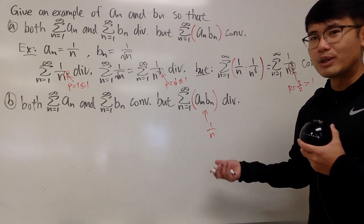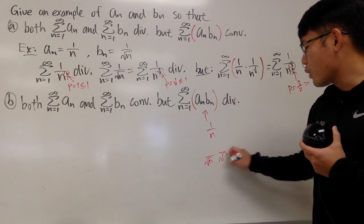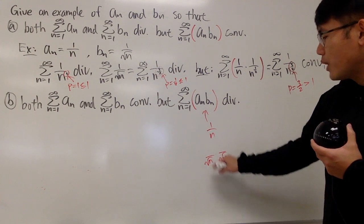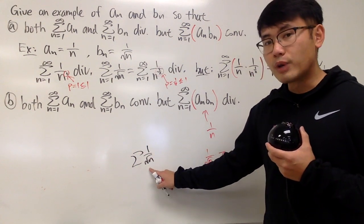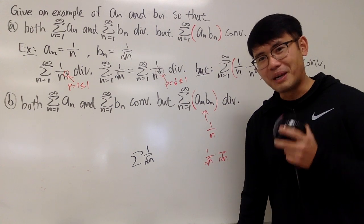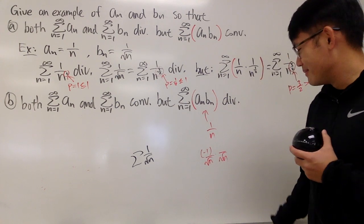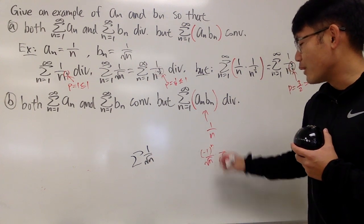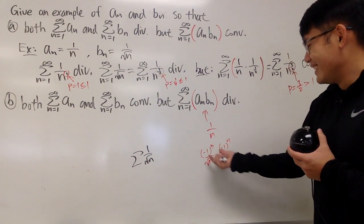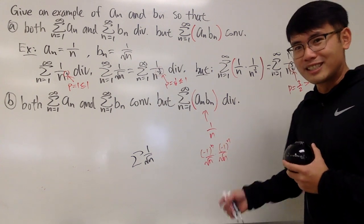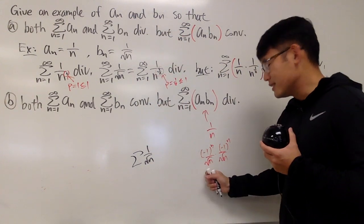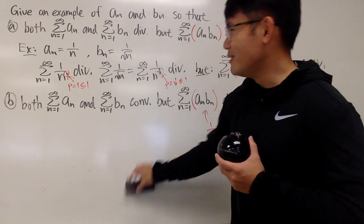Think about what times what will give you 1 over N. You can use 1 over square root of N times 1 over square root of N — that gives you N in the denominator. But the series of 1 over square root of N diverges. However, remember that negative 1 times negative 1 also gives positive 1. So using negative 1 to the Nth power times negative 1 to the Nth power gives 1 on top and N on the bottom. That's the strategy — and there's no condition that aₙ and bₙ cannot be the same.